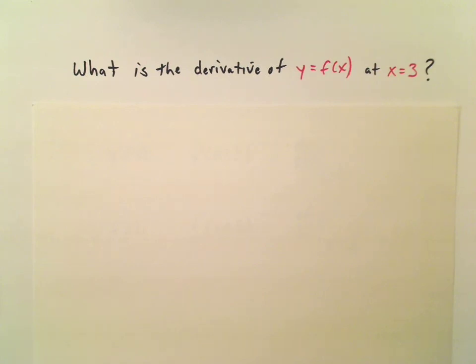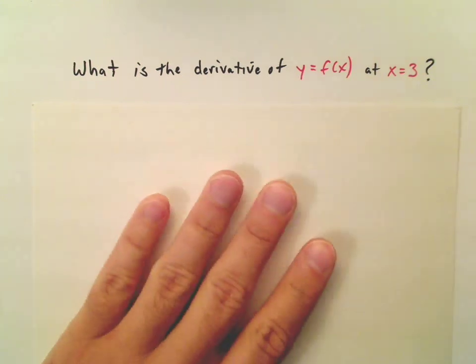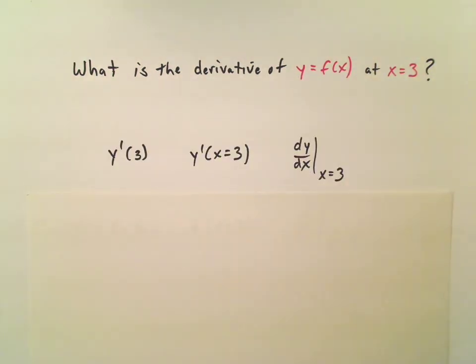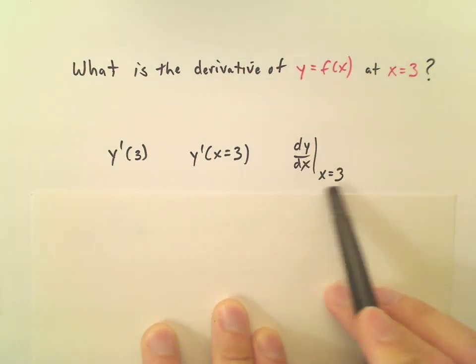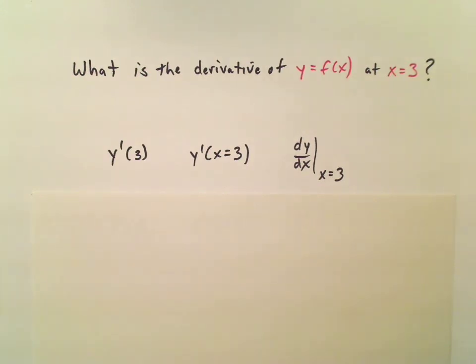A related question is what is the derivative of y equals f of x at some particular coordinate like x equals 3. This simply means you have two things to do. First, you're going to find the derivative and then you're going to substitute x equal to 3. Here are some expressions for that: y prime 3, y prime x equals 3, and then this one right here, dy over dx, x equals 3. They all mean the same thing.